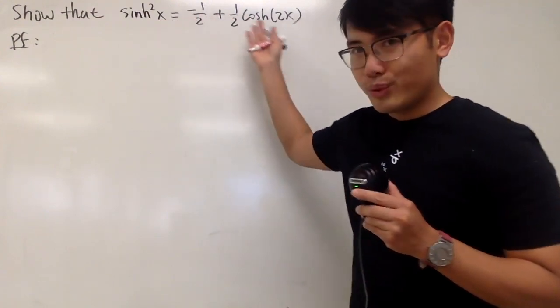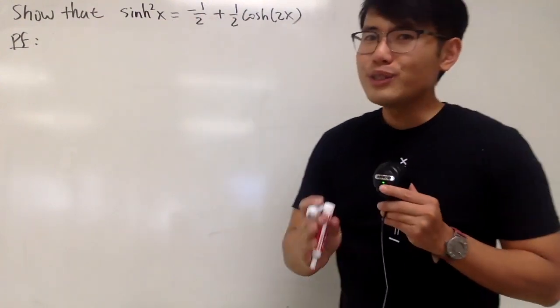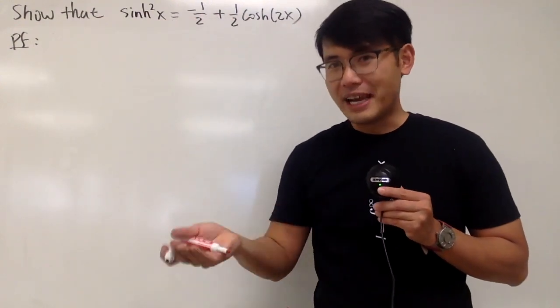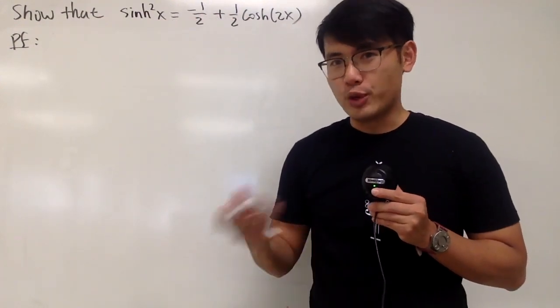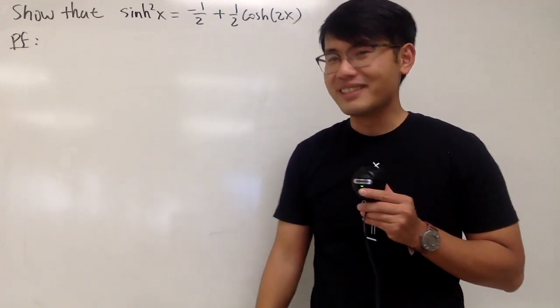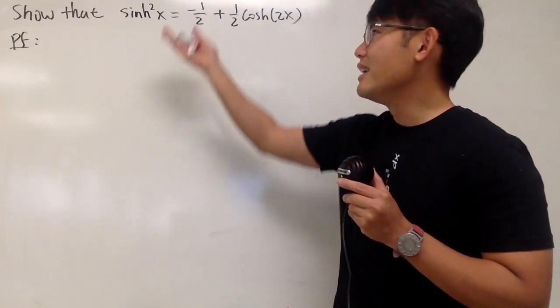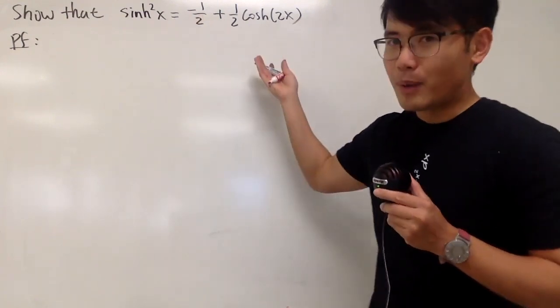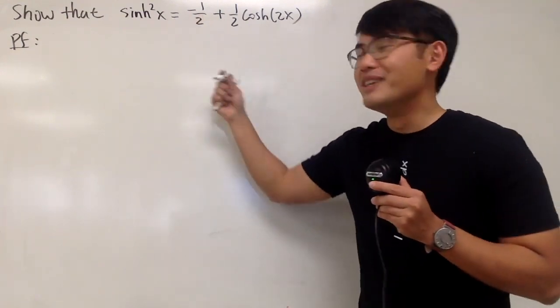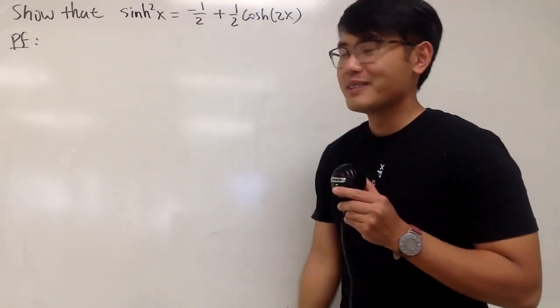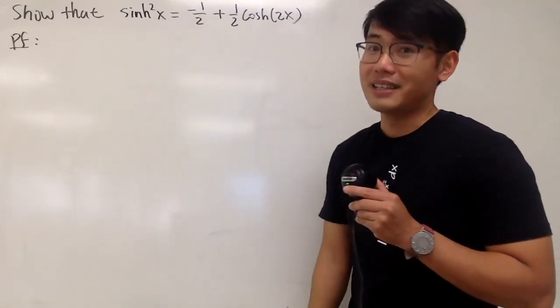sinh squared x is equal to this. Notice that this is very similar to the sine squared — the traditional sine function. We have the power reduction formula, and we also have the power reduction formula for the hyperbolic sine squared.